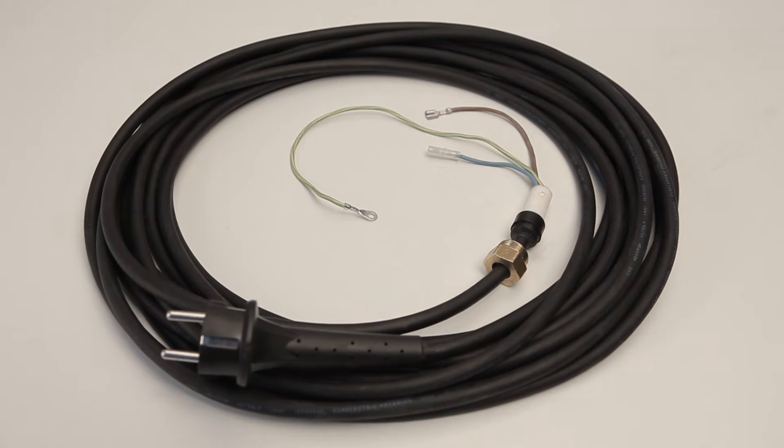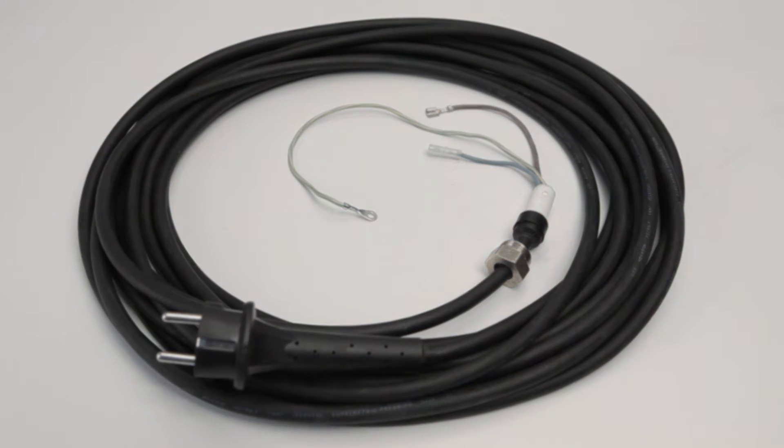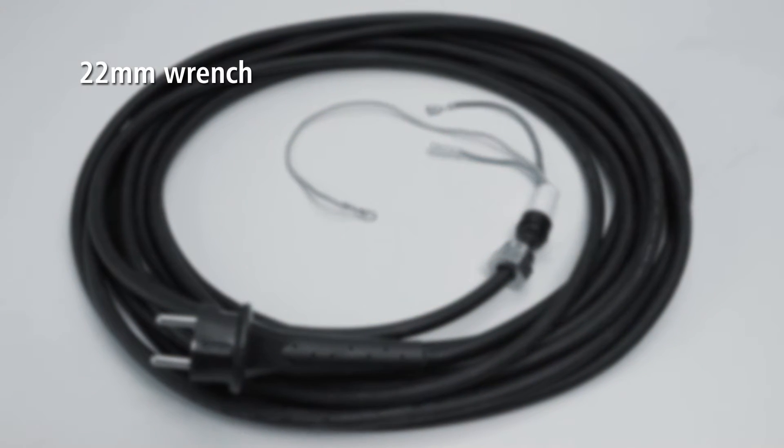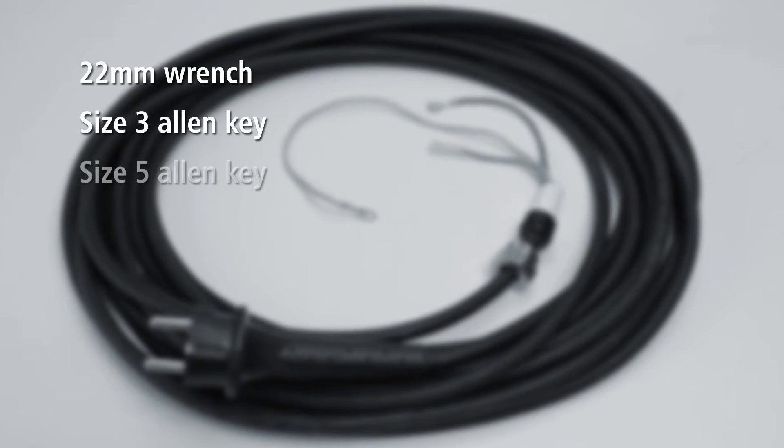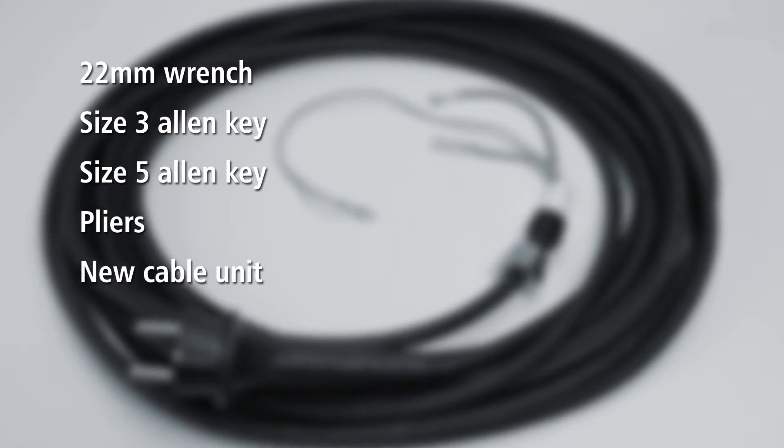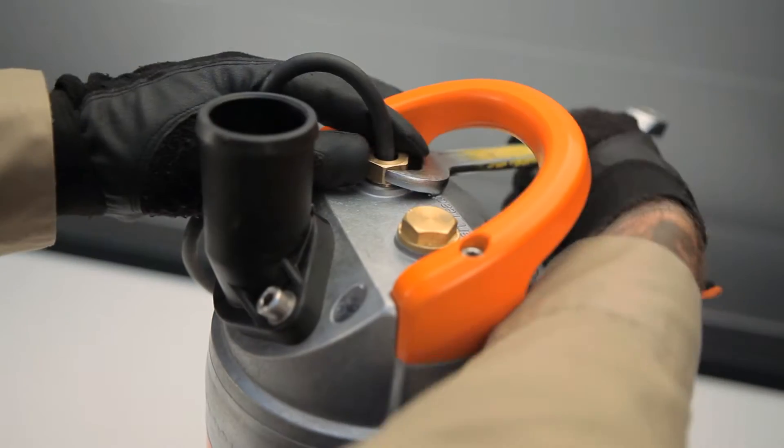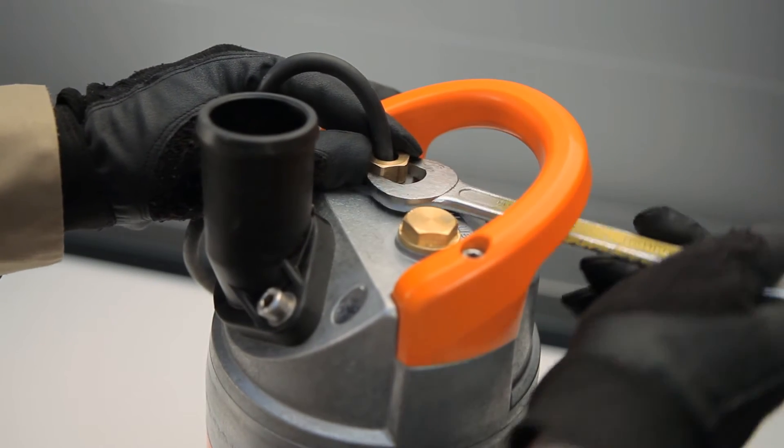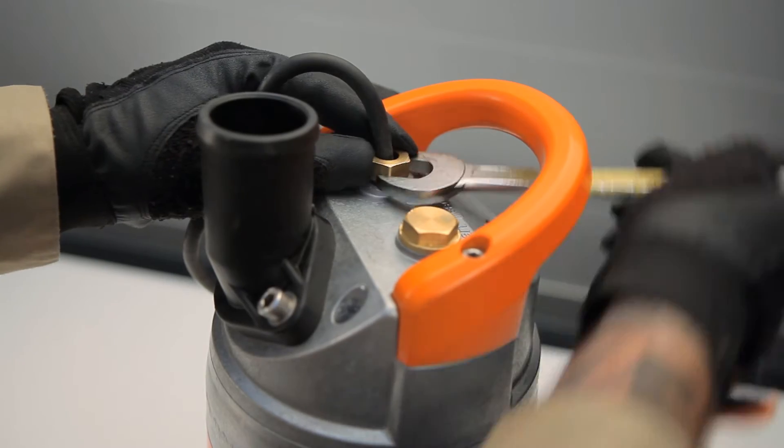Sometimes, you may need to replace a damaged cable on your ready pump. For this, you'll need a 22mm wrench, a size 3 and size 5 Allen key, pliers, and a new cable unit. To replace the power cable unit or the float sensor, first loosen the cable gland nut using your wrench.